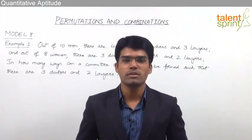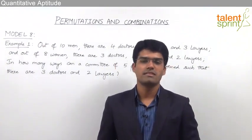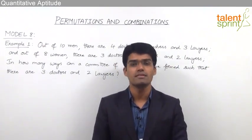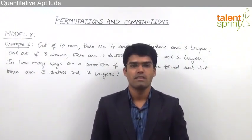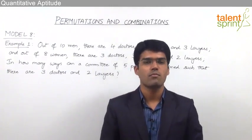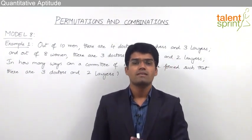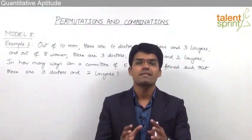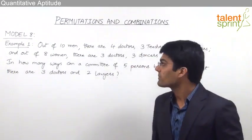Let us now take the 8th model from this topic of permutations and combinations, where we shall discuss questions related to combinations but with a condition given in the question. Earlier in model 7 we took basic questions from combinations, but now we shall take up questions where selection of a team or a committee has to be done along with certain conditions to be followed. Let's look at the first example.